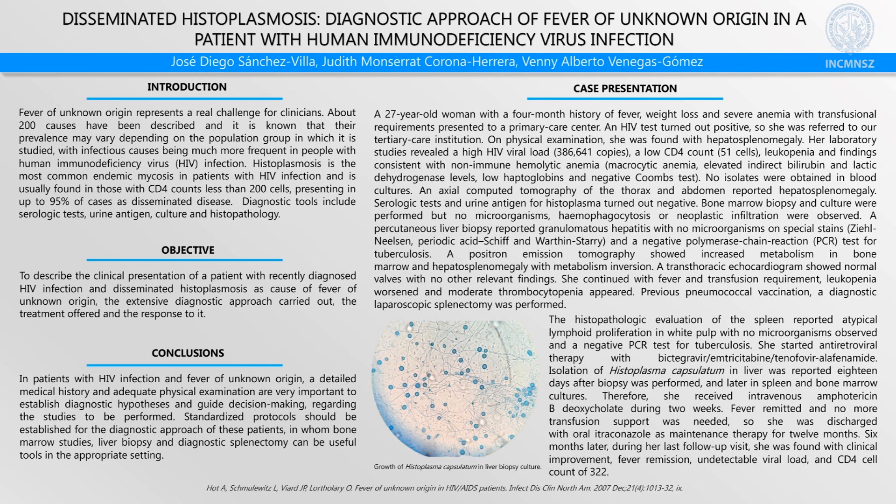Therefore, she received treatment for two weeks with intravenous amphotericin B deoxycholate; fever remitted and no further transfusion support was required. She was discharged and is currently on treatment with oral itraconazole, maintaining therapy for 12 months. During a follow-up visit in September, she was found with clinical improvement, fever remission, undetectable viral load, and CD4 count of 322 cells.